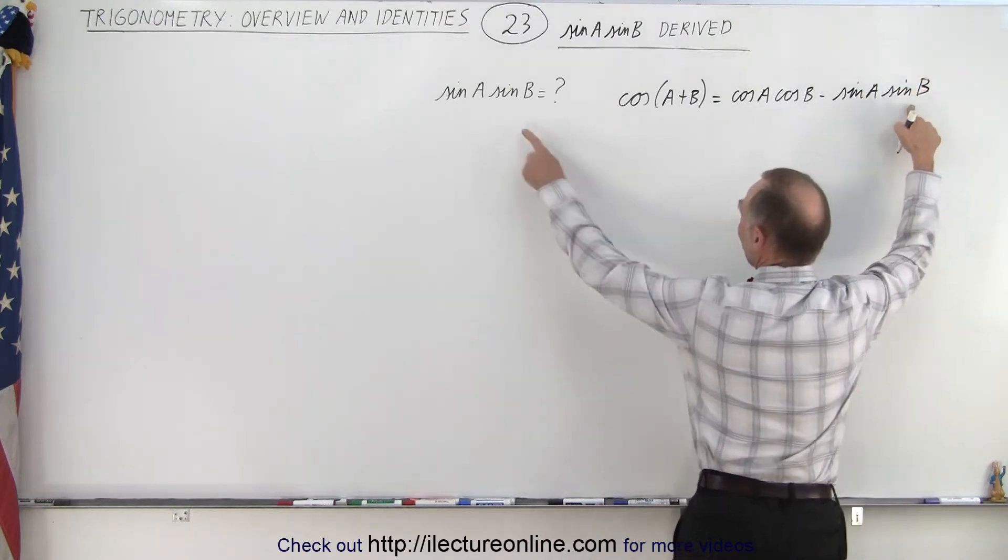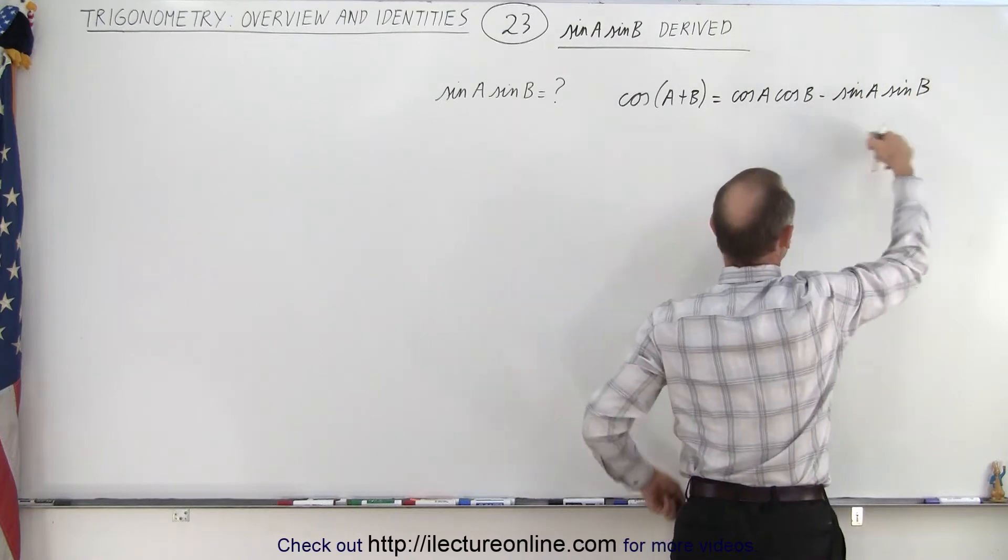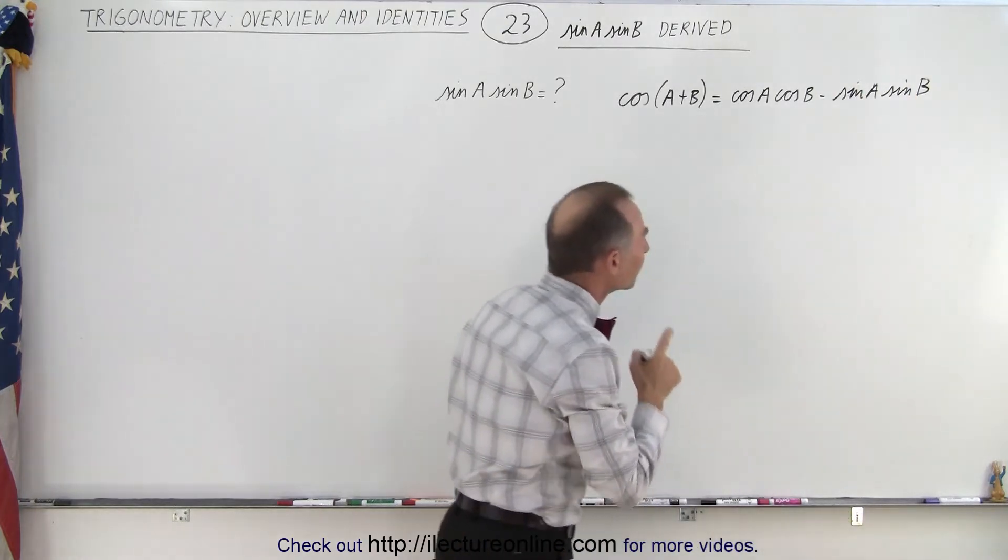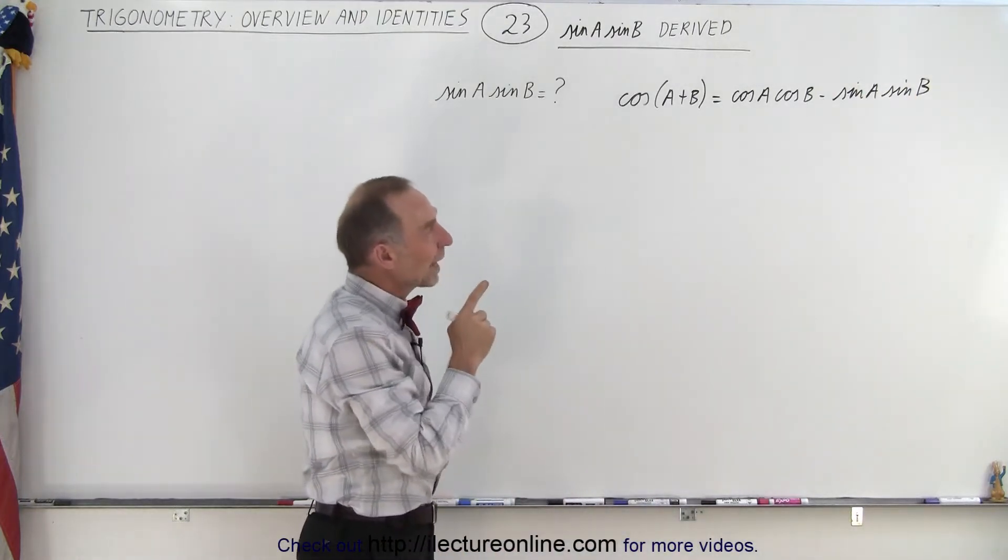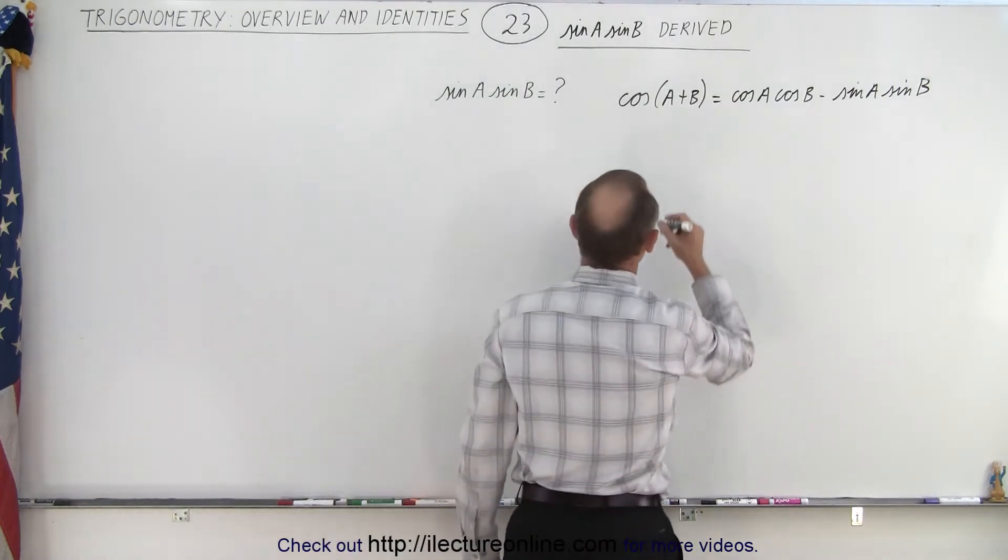And there we have it, the sine of a times sine of b, which is what we're looking for. So somehow we have to be able to isolate that. We can do that by, go ahead and do this instead,